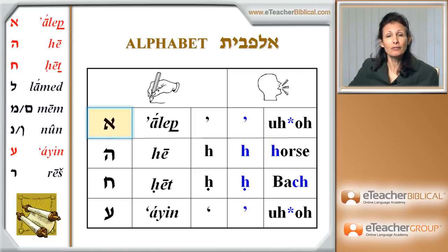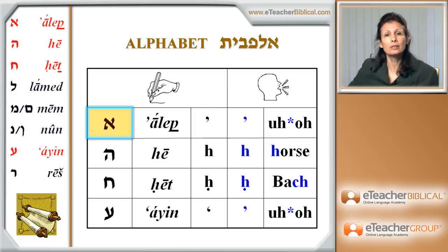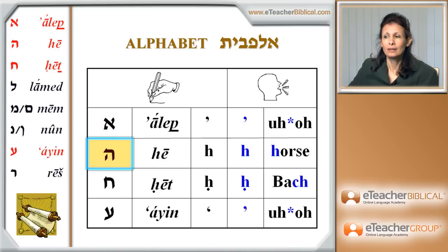The very first letter you see here is Aleph — that's the name. Aleph is the name of the letter. It is pronounced as a glottal stop. The next letter is Hey. Hey is very similar to the English H, so you are going to pronounce it as H.